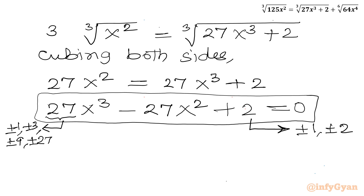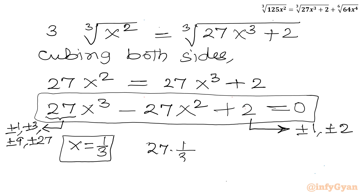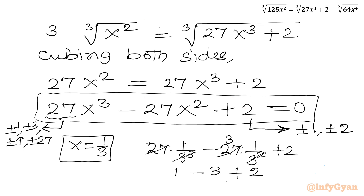Now I will consider the ratio of constant to leading coefficient. If I plug in x equals 1/3, let us check: 27 times (1/3)³ minus 27 times (1/3)² plus 2. Since 3³ is 27, this gives 1 minus 3 plus 2, which equals 0. So x equals 1/3 is our base solution.